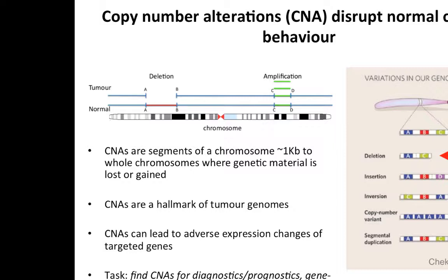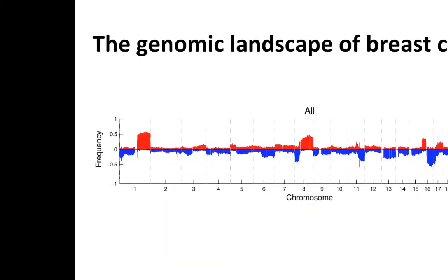Any questions so far? Regarding the genomic landscape of breast cancer — a normal sample would look pretty much flat. This figure represents a synthesis of a thousand cases, where the y-axis shows the proportion of tumors with a particular alteration at that locus. Is there something similar just for one sample? Yes, we'll see what that looks like.